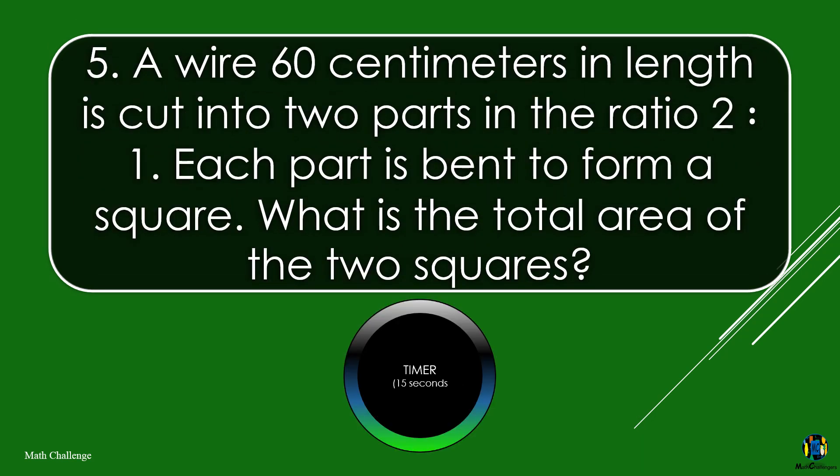A wire 60 cm in length is cut into two parts in the ratio 2 to 1. Each part is bent to form a square. What is the total area of the two squares?